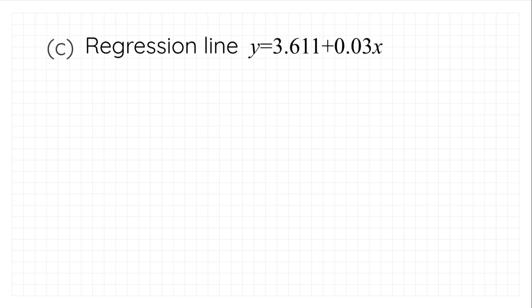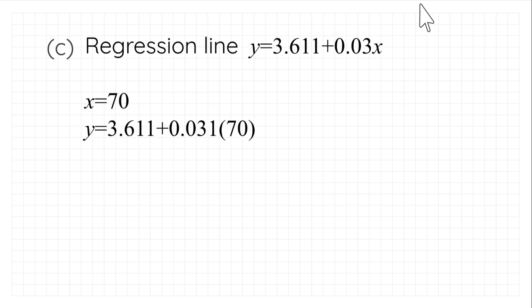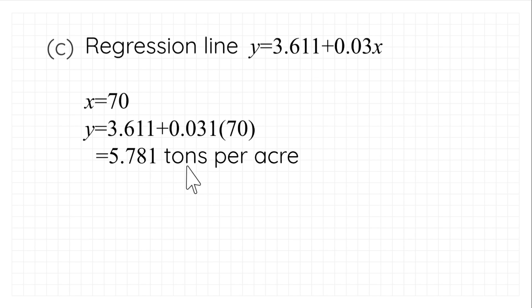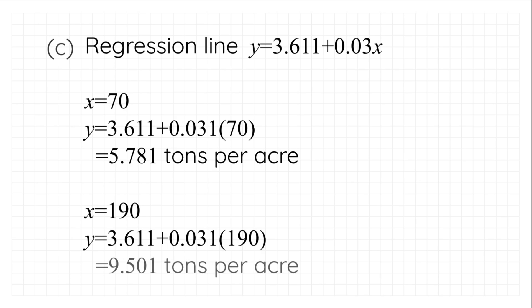For the next question, we use the regression line to estimate yields for 70 cm and 190 cm of water added. Since x is already in the correct unit of centimeters, no scaling is needed. Substituting x equals 70, the yield of paddy is 5.781 tons per acre. Substituting x equals 190, the yield of paddy is 9.501 tons per acre.